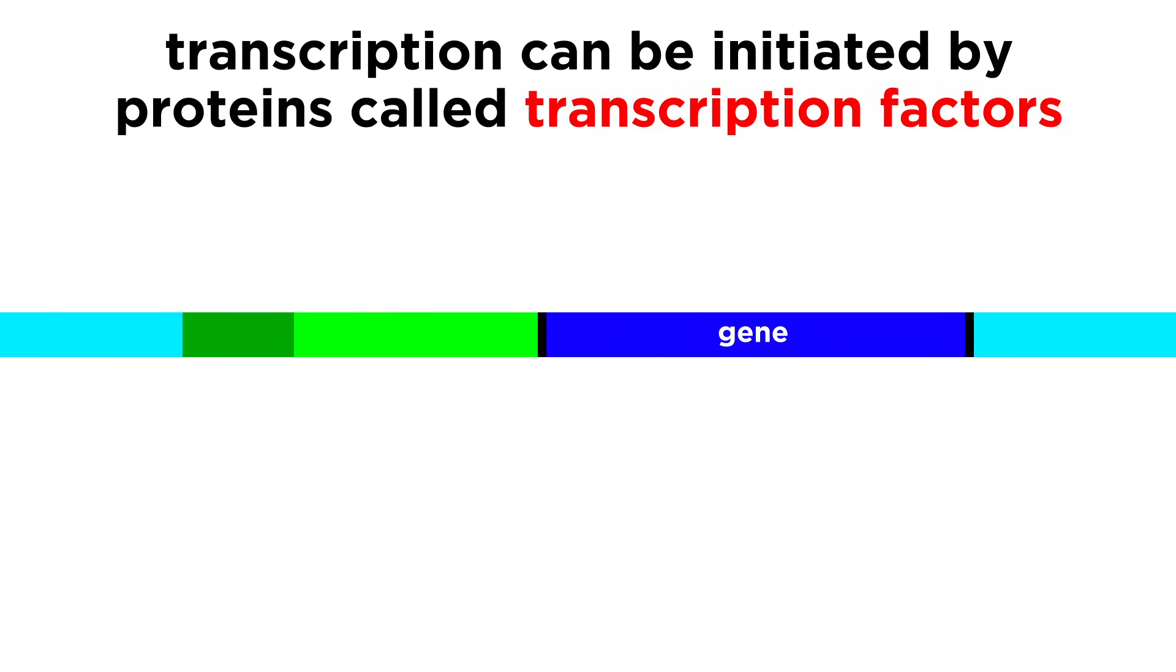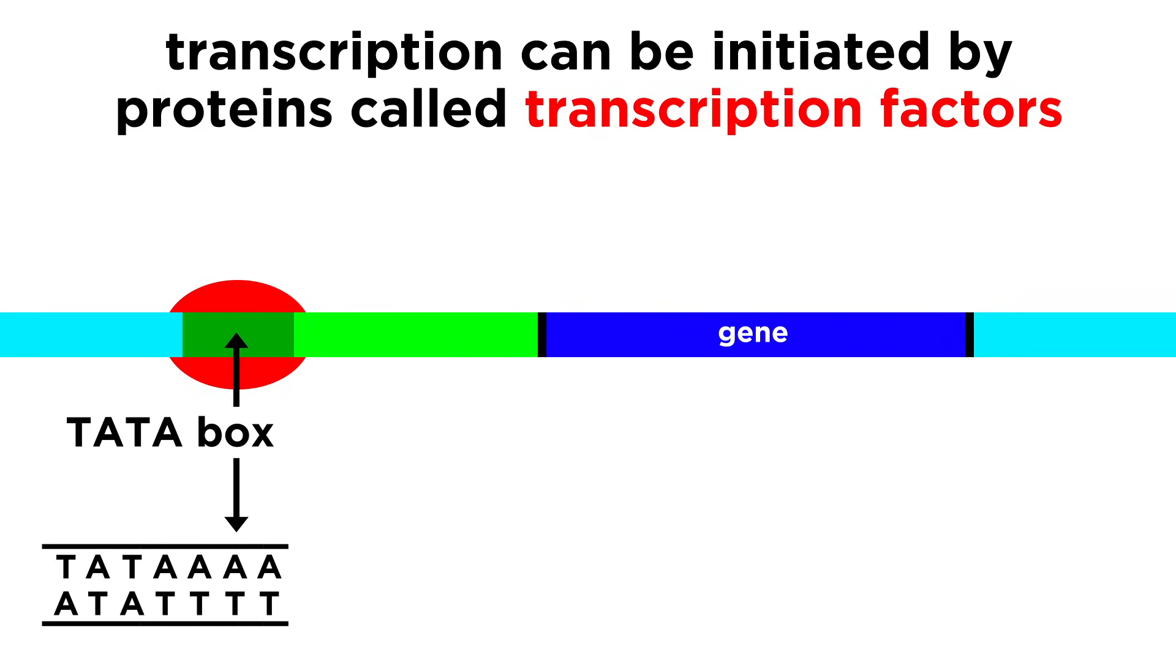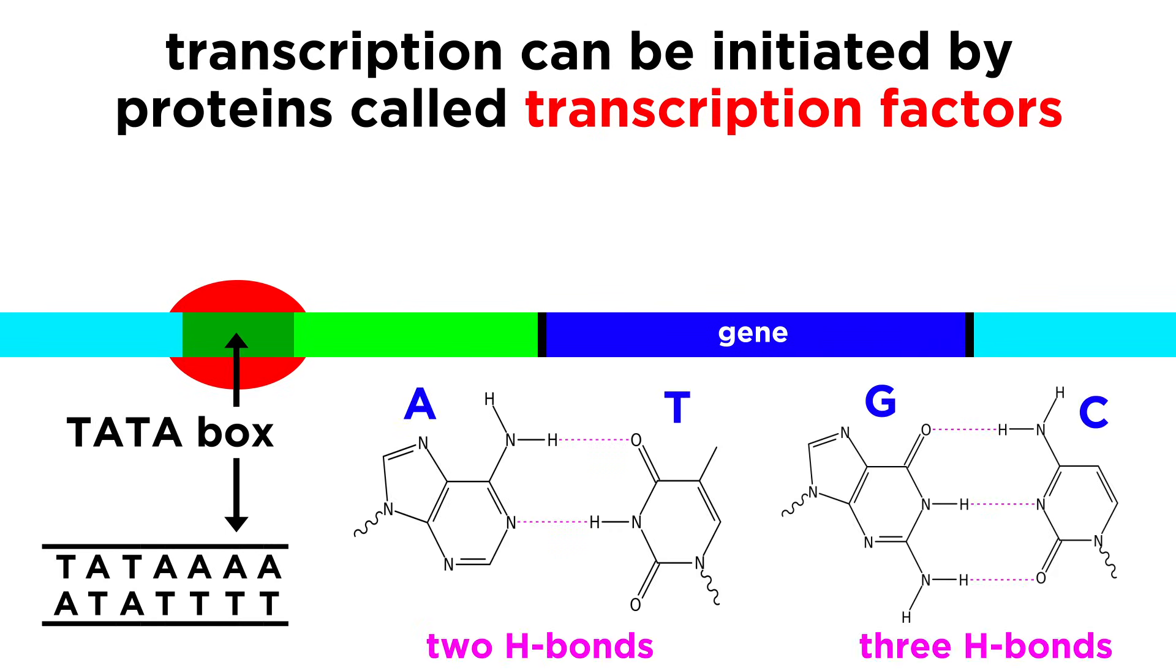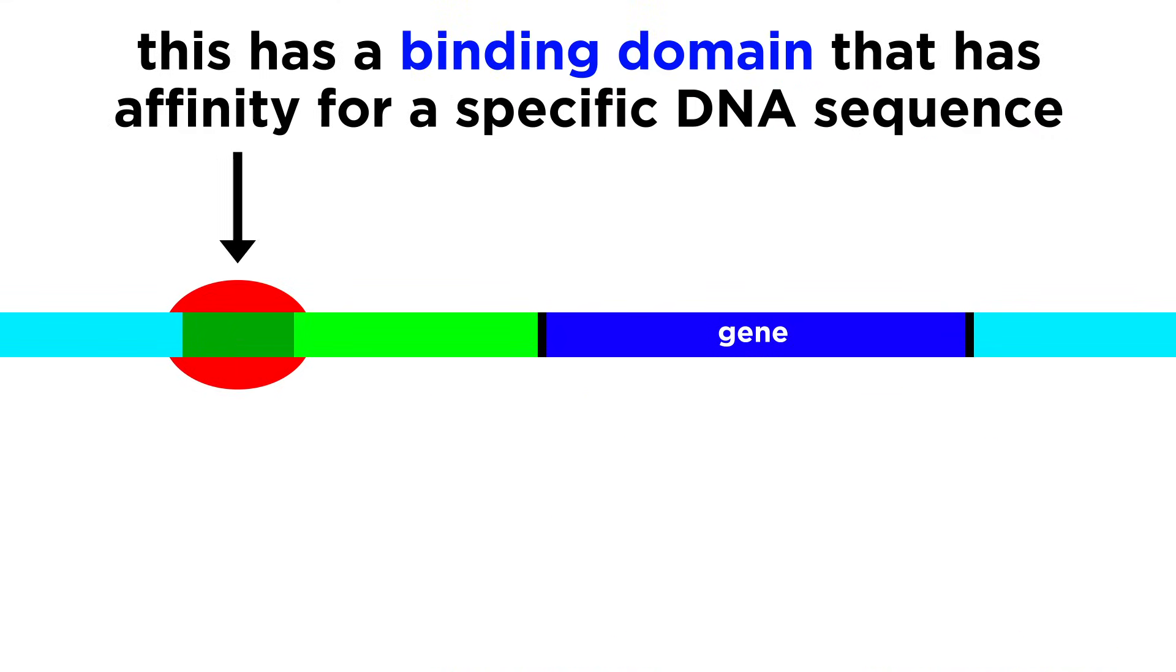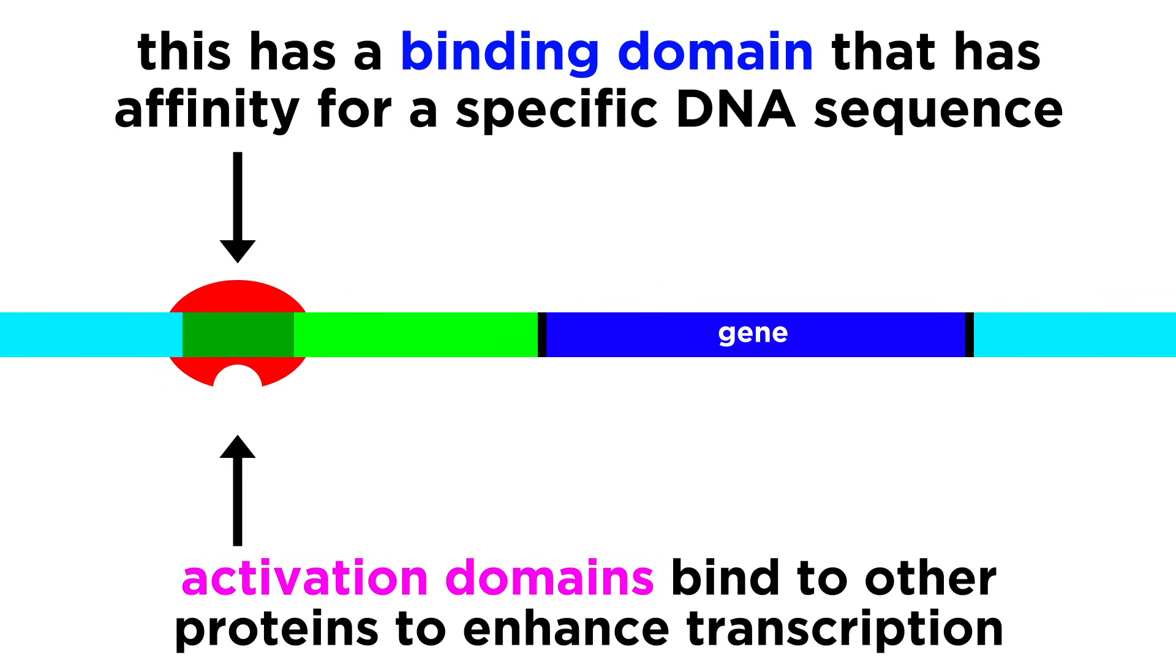In order for transcription to proceed, proteins called transcription factors are necessary. Some of these bind to a section of a promoter, usually in a region called a TATA box, as thymine-adenine pairs are easier to pry apart, given that they make one fewer hydrogen bonds than a CG pair. Binding to DNA occurs due to a binding domain that has affinity for a specific sequence of nucleotides in the promoter. The transcription factor also has an activation domain, which will bind to other regulatory proteins that enhance transcription. A transcription factor can have one or more of either of these types of domains.